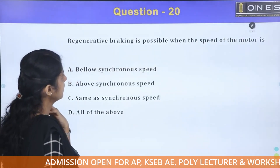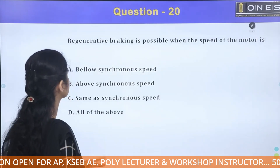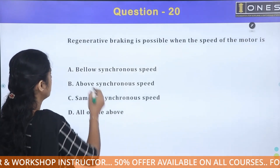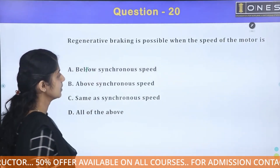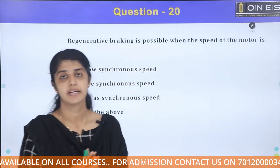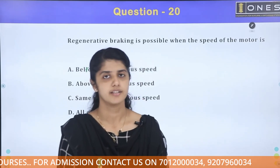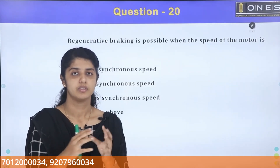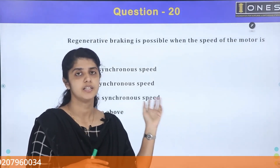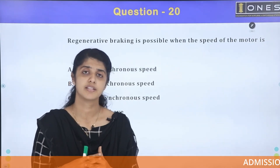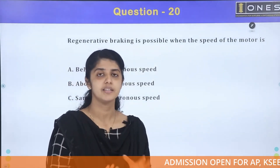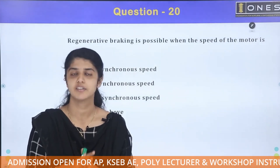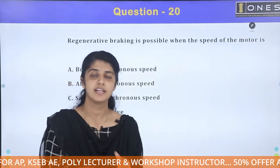Regenerative braking is possible when the speed of the motor is: below synchronous speed, above synchronous speed, same as synchronous speed, or all of the above. Regenerative braking is the most efficient braking method — when braking, the energy is not wasted but is fed back to the supply side.